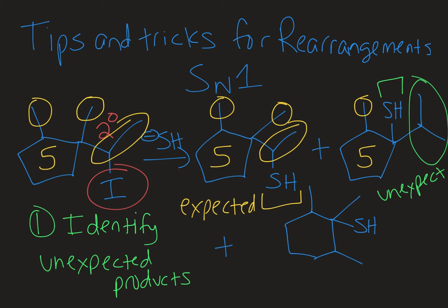The last product is also unexpected because it has a six-membered ring and I started with a five-membered ring. So both of these products must have resulted from rearrangements — and in fact different rearrangements, because their skeletal structures are different from one another as well. Let's go to the next slide and learn the next tip.